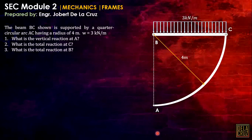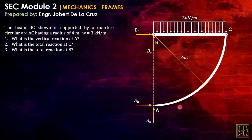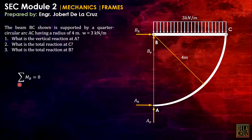Drawing the free body diagram: both supports are pins, so we have two reaction components at each point — resisting translation in any direction, best expressed in x and y axes. To find the horizontal reaction at A, we take the summation of moments about B equal to zero.